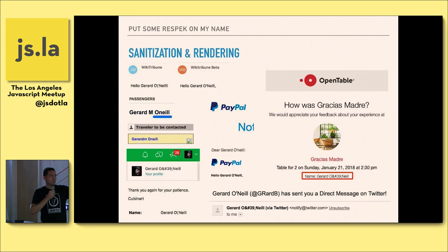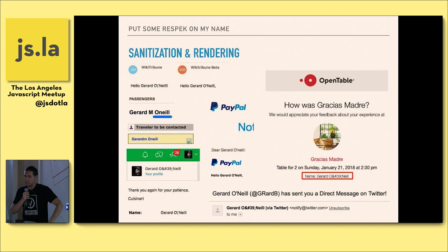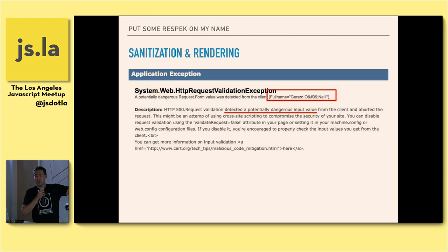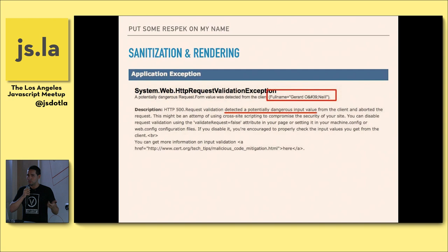My favorite example from that slide is United Airlines. They took my middle initial, lowercased it, added it to my first name, removed my apostrophe, and lowercased the N, all at once. So my name is just completely wrong every time I book with United. My all-time favorite example, though, is the time I was asked to leave a review on OpenTable and I crashed it. It said 'detected a potentially dangerous input value' and showed me my name as O ampersand pound sign 39 semicolon Neil. It's funny because if you leave a review, we use apostrophes all the time in English for contractions and possessives — it's fine in the review body, but in my name it's treated differently.